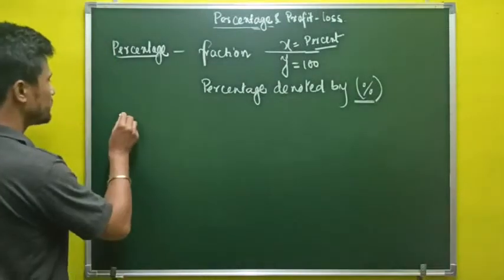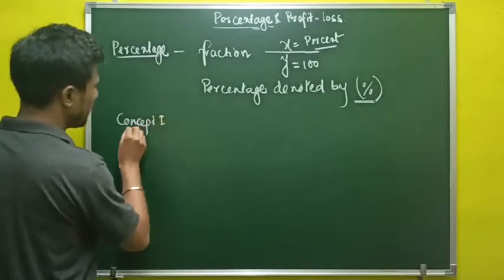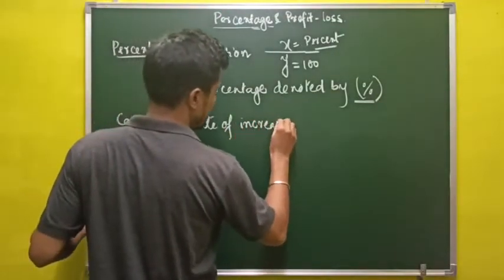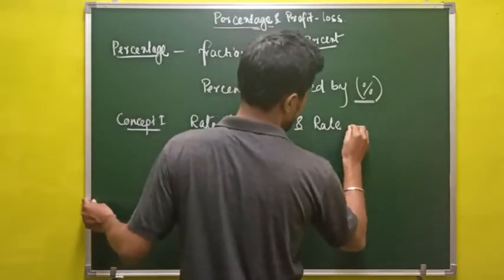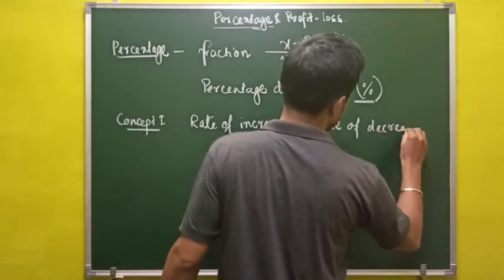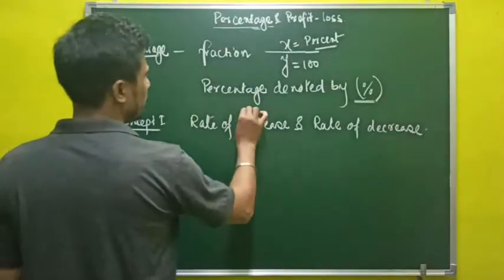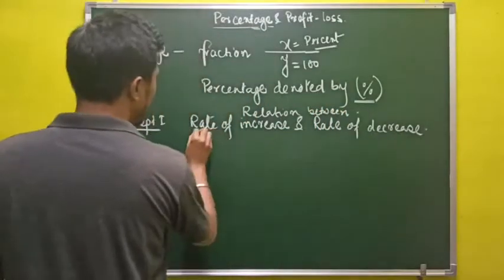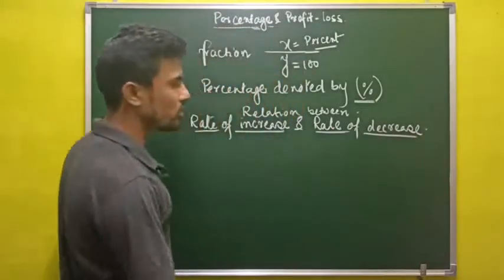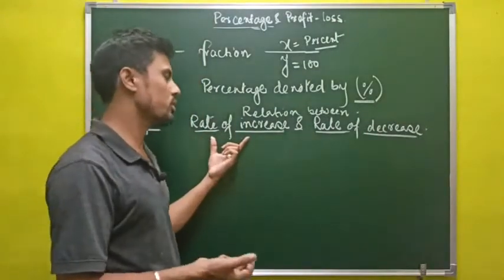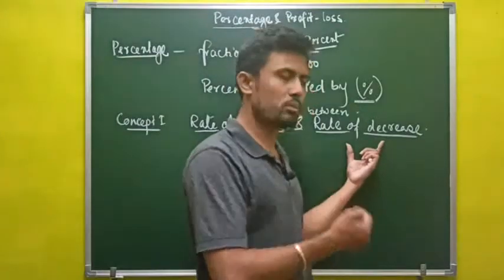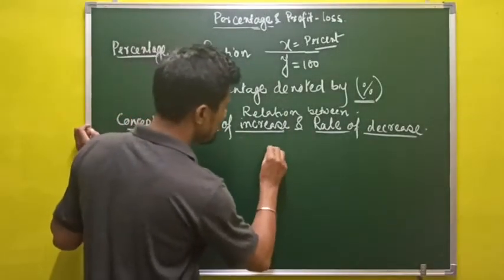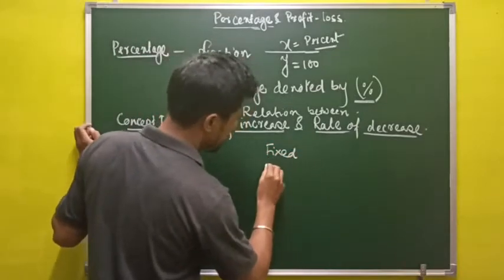The first concept will be the relation between rate of increase and rate of decrease. In this case, we will consider the rate of increase of a price, or rate of consumption of a commodity, or rate of decrease of price or commodity. We will consider a fixed amount of expenditure.